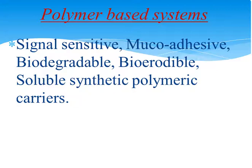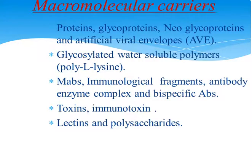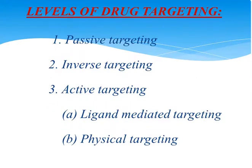Polymer-based systems may be signal-sensitive, mucoadhesive, biodegradable, bioerodible, soluble or synthetic polymeric carriers. Then macromolecular carriers include proteins, glycoproteins, neoglycoproteins and artificial viral envelopes, glycosylated water-soluble polymers, MAbs, immunological fragments, antibody-enzyme complexes and biospecific antibodies. Toxins, immunotoxins, lectins and polysaccharides may also be used.